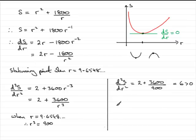So therefore we can say that S is a minimum when r equals 9.7 centimeters to one decimal place.